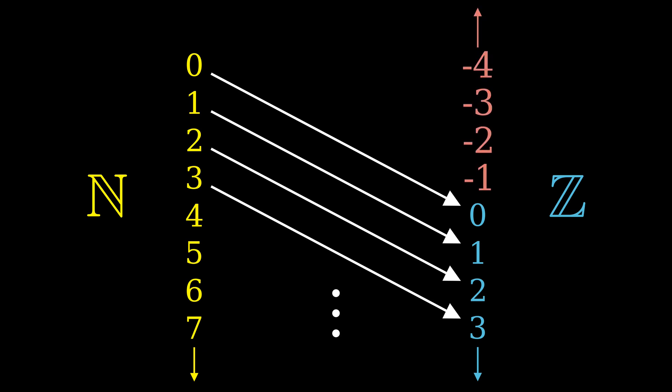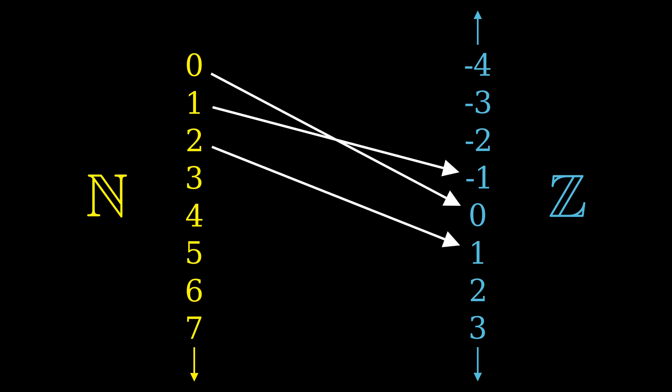But just because one particular way of matching up the numbers doesn't give a bijection, that doesn't mean that there's no way to find a bijection. Instead, we can match them by alternating back and forth. Let's say 0 matches to 0, but 1 goes to negative 1. Next, we'll match 2 with positive 1. 3 will match to negative 2, and 4 will match to positive 2. Likewise, 5 matches to negative 3, and 6 matches to positive 3. And so on.